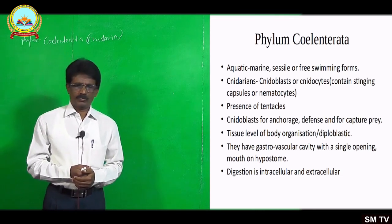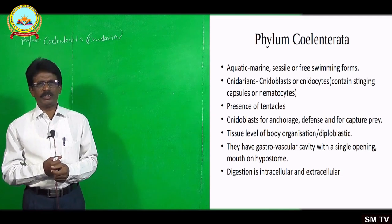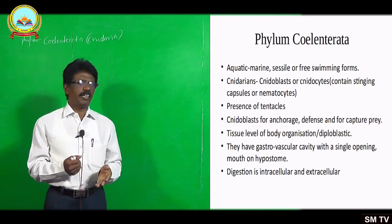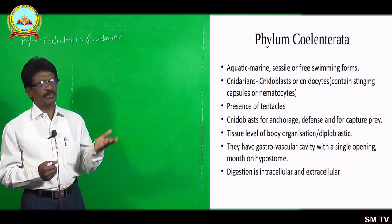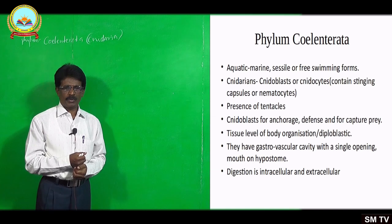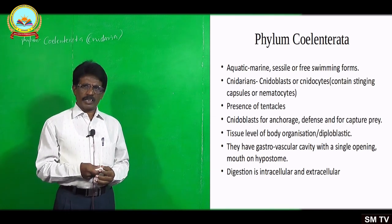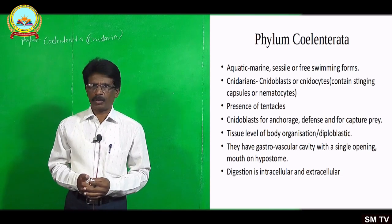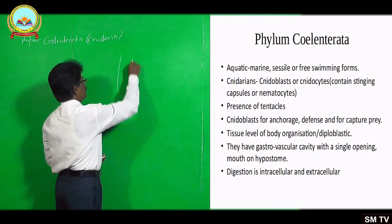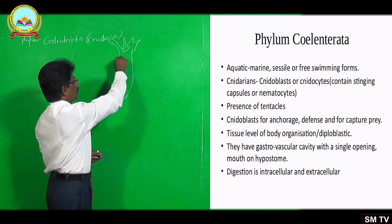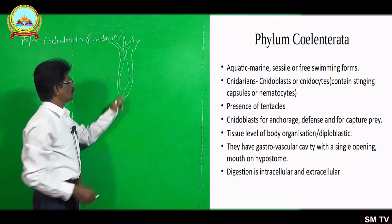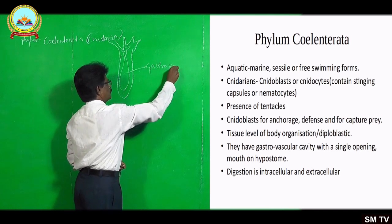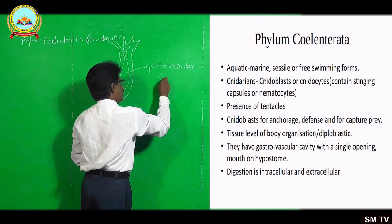About the body organization — there is a tissue level of body organization. They are diploblastic, with ectoderm and endoderm. The body wall encloses a cavity called the gastrovascular cavity. For example, in case of the hydra, the body wall encloses a cavity — this is called the gastrovascular cavity.